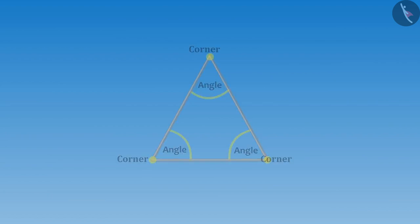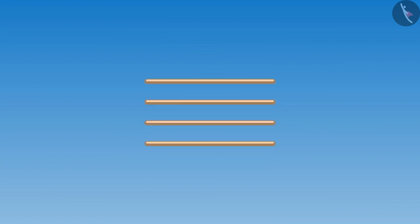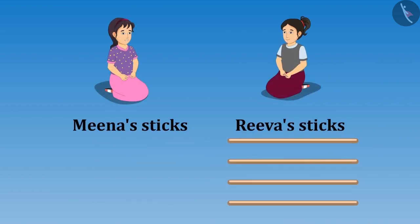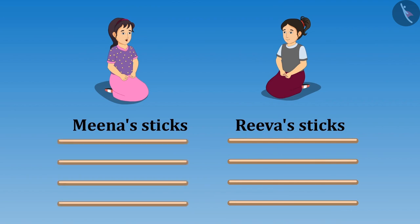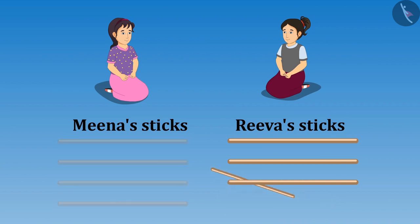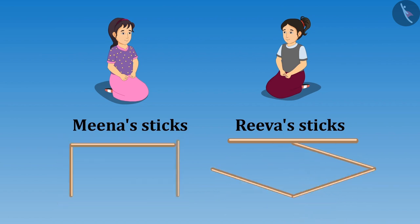Absolutely right Riva. Come on, we will form a figure with four sticks of equal length. So here are your four sticks and here are my four sticks. Then Meena and Riva formed figures with their sticks and showed it to each other.